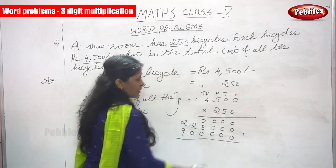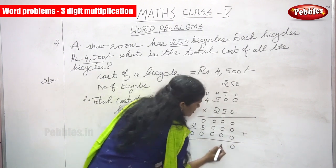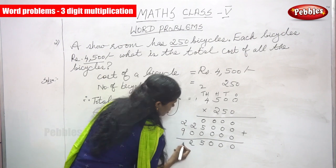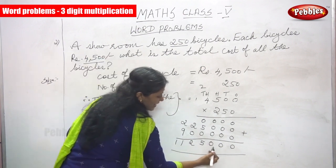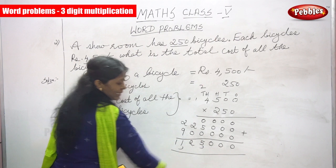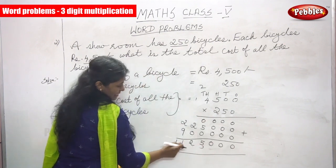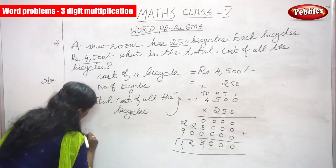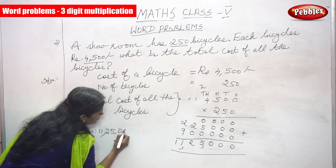Now I am going to add all the numbers. 0 plus 0 plus 0 is 0. Then 0 plus 5 plus 0 is 5. Then 2 plus 0 is 2. Then 9 plus 2 is 11. So the result is 1,125,000. You have to leave the last three digits and put a comma for every two digits. The answer for the total cost of all the bicycles is rupees 11,25,000.